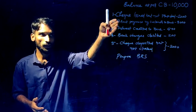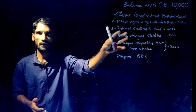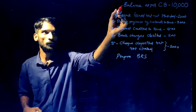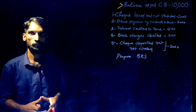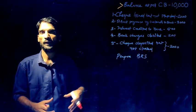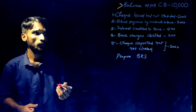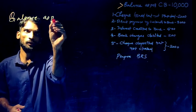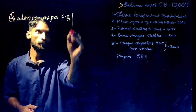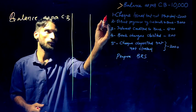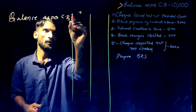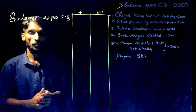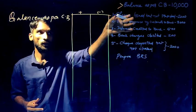We have to prepare the BRS. The starting point is the balance as per Cash Book. We prepare two or three columns — one plus column and one minus column — so the BRS will show the difference across transactions.